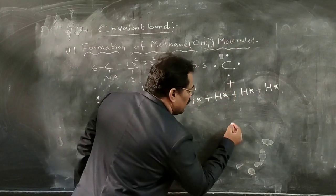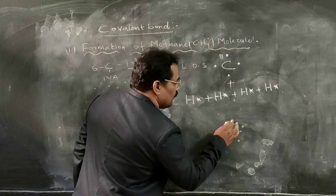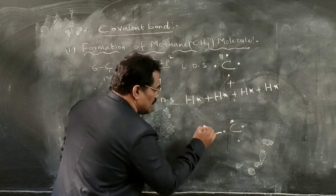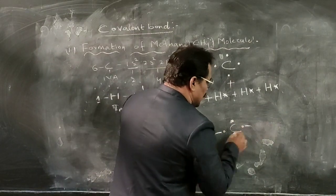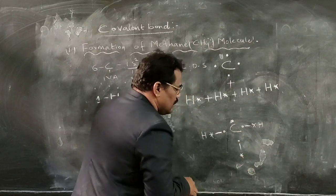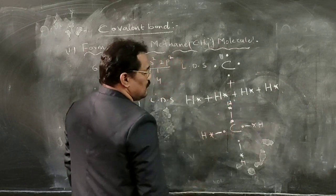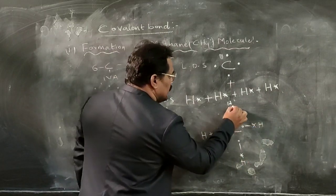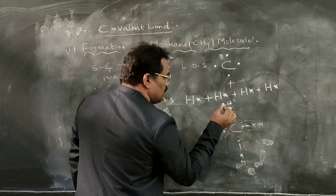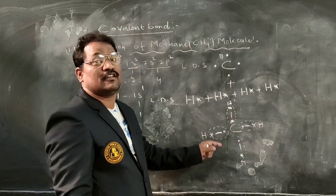These 4 hydrogens will share their electrons with the 4 electrons of carbon to form the methane molecule. Each hydrogen shares one electron with one electron of carbon. Four hydrogen atoms each share one electron, forming four covalent bonds. So carbon shares each of its four electrons with four hydrogen atoms, attaining the stable electronic configuration of neon.